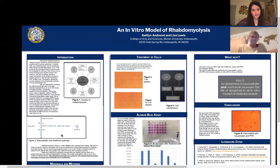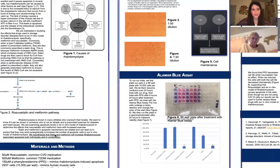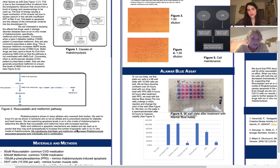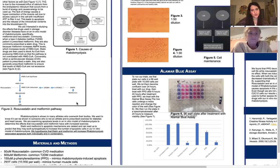So these drugs do both affect HMG-CoA production, which eventually downstream affects cholesterol production. So again, rhabdomyolysis is commonly shown in many athletes who overwork their bodies. However, we want to know if it can be shown in someone who's not an athlete but is prescribed these two drugs for type two diabetes and cardiovascular disease and is also prescribed exercise as supplemental therapy.